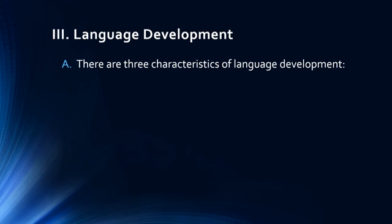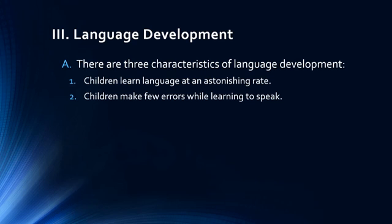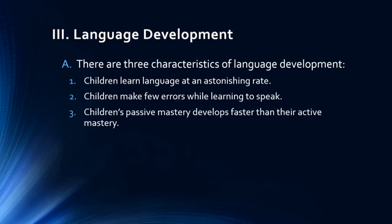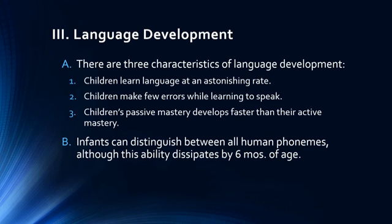There are three characteristics of language development. Children learn language at an astonishing rate — the human brain is essentially primed to learn language. Children tend to make few errors while learning how to speak, and their passive mastery develops faster than their active mastery; they develop a pretty good sense of how language works simply by listening to others speak. Infants can distinguish between all human phonemes when they're born, but this ability starts to dissipate by six months of age — we distinguish phonemes for the languages being spoken around us, and those we don't hear are no longer distinguishable.